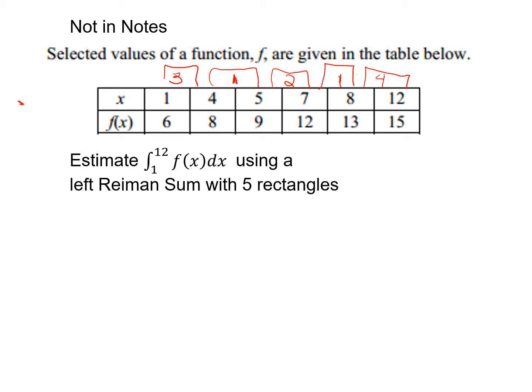So because we are using a left Riemann sum, we want to take our y value and multiply it times the width of our rectangle. So the first one would be my y value. Since I'm using a left Riemann sum from 1 to 12, I'm going to start with 6. So my height is 6, and my width is 3. Next, I'm going to use 8. So I'm going to use the y value of 8. And because I drew my rectangle between 4 and 5, my width is 1.